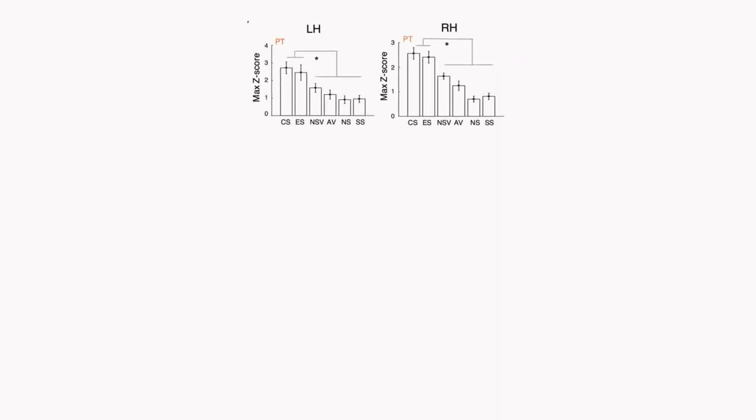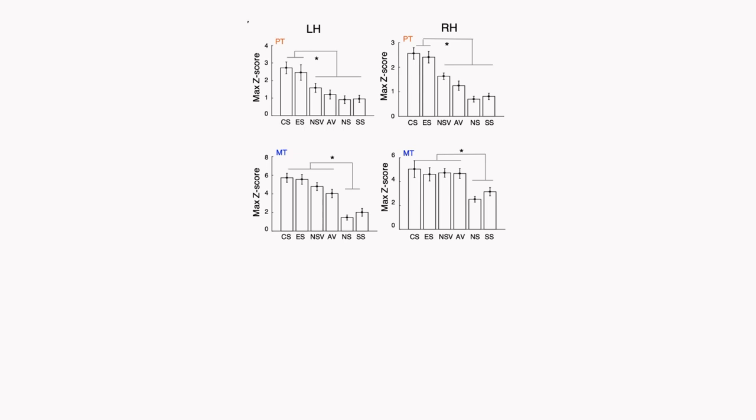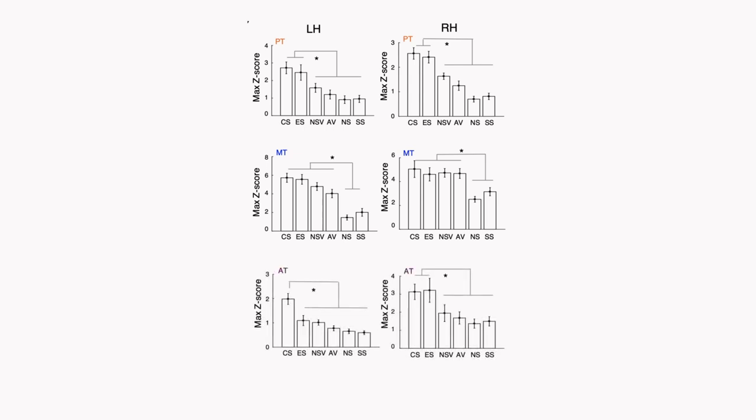In both hemispheres, the PT and AT responded nearly exclusively to human speech, while the MT responded to human speech and human or animal vocalizations. The right hemisphere AT responded to both Chinese and English speech,